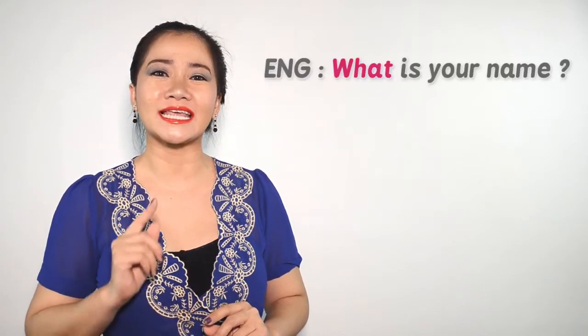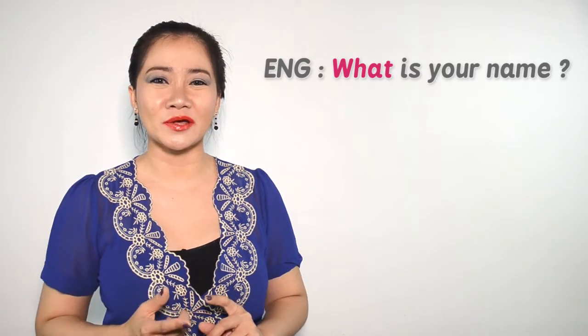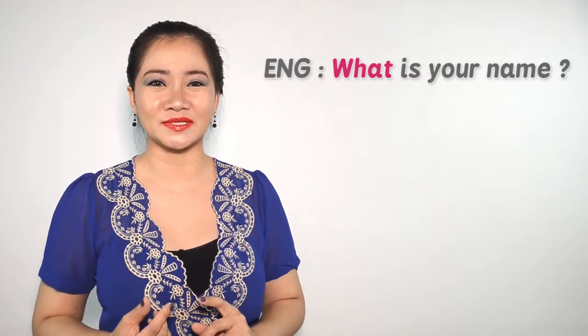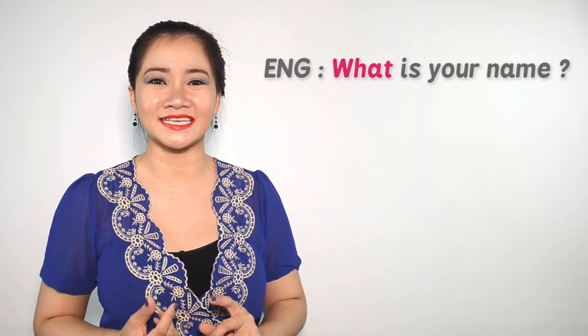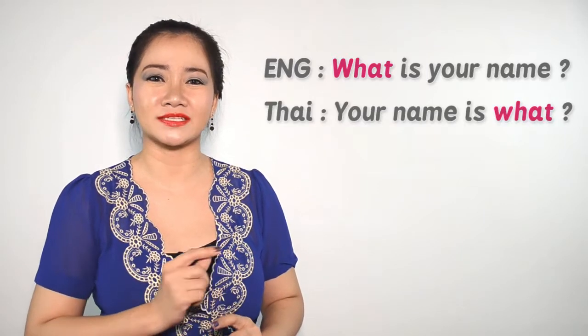In English, when you want to ask someone's name, you will say 'What is your name?' But in Thai, it's the other way around — it's the opposite. This is how we say it: 'Your name is what?' So in order to create a question in Thai, you have to speak backwards, and that's the trick. This is how you will create a Thai question.